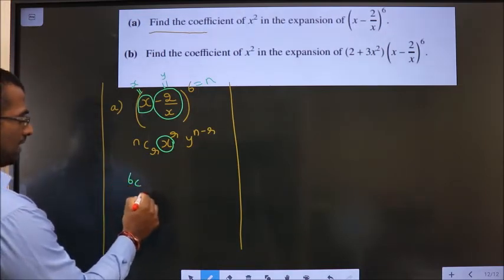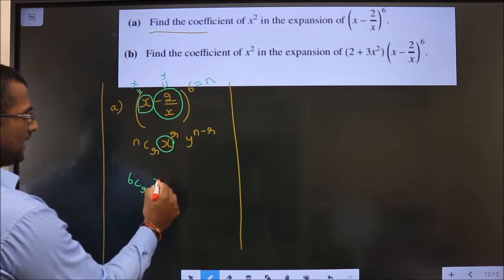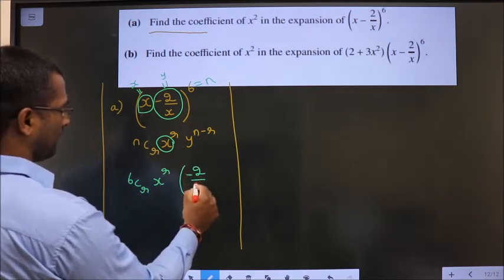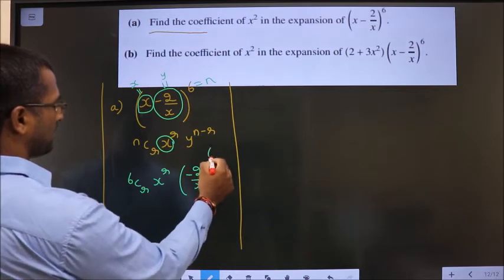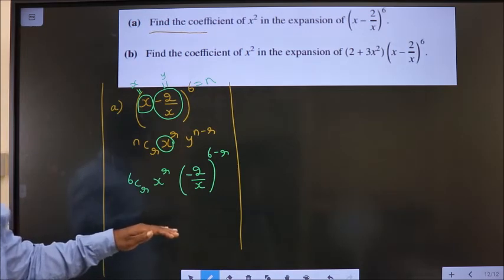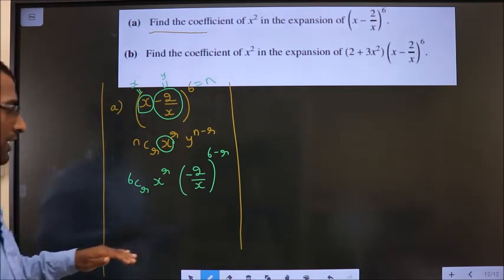So, it will be 6Cr, in place of x, it is x power r. In place of y, it is minus 2 by x power 6 minus r. Simplify this to the maximum extent possible. And how do we do that?